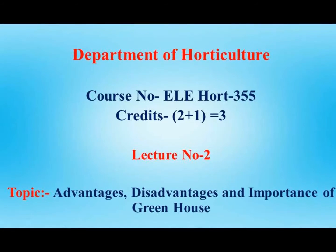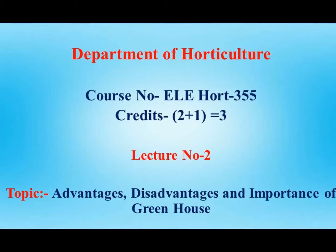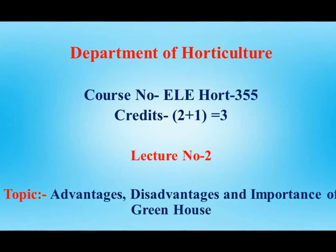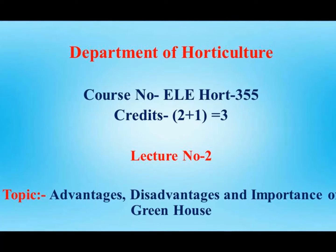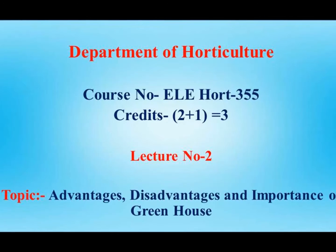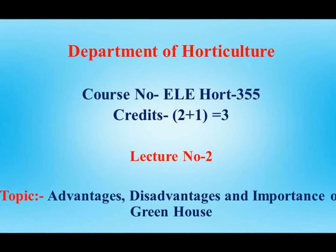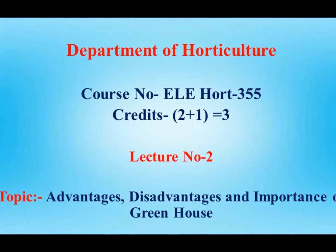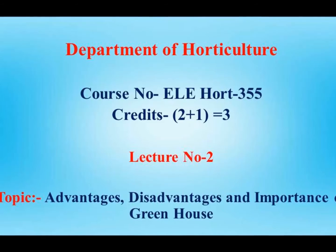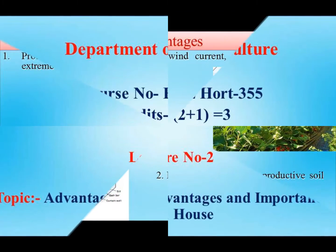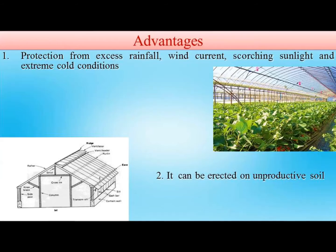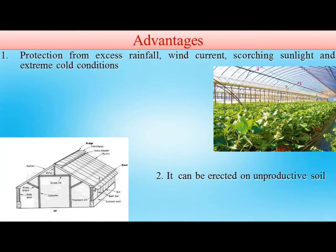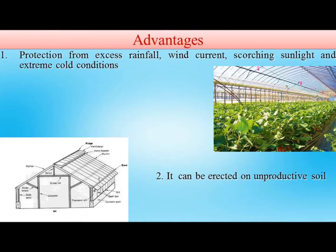Already you know about Poly House. Poly House is a house or a structure made up of transparent and translucent material like polyethylene or glass, where the crops or plants grow under partial to fully controlled climatic conditions. There are several advantages and disadvantages of greenhouse. First, we have to see about advantages of greenhouse.